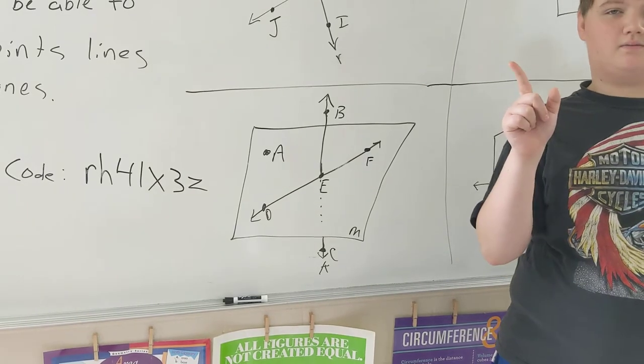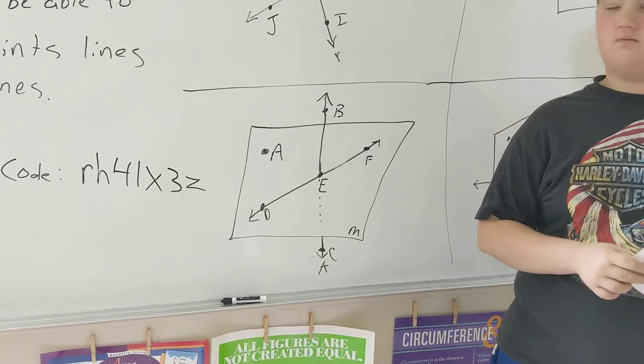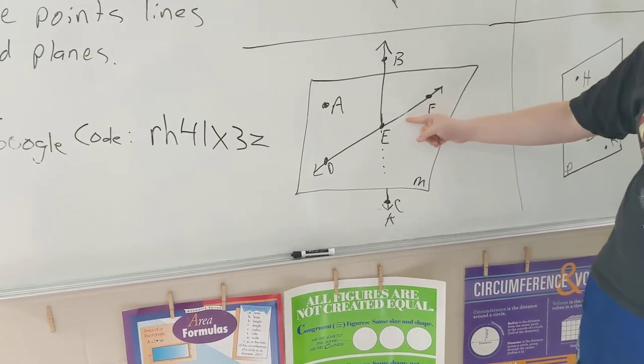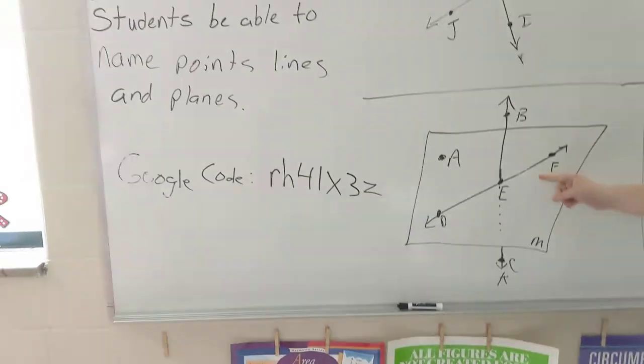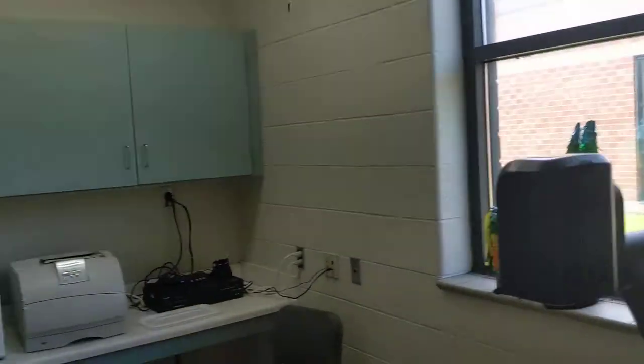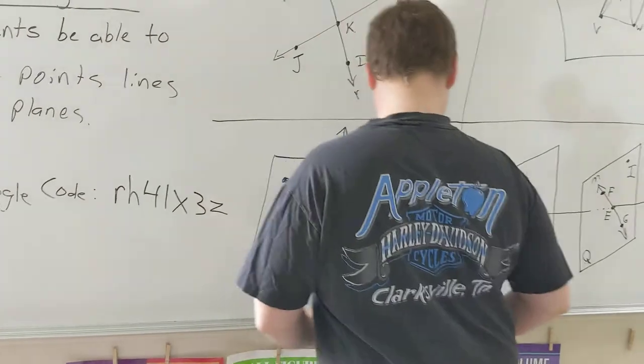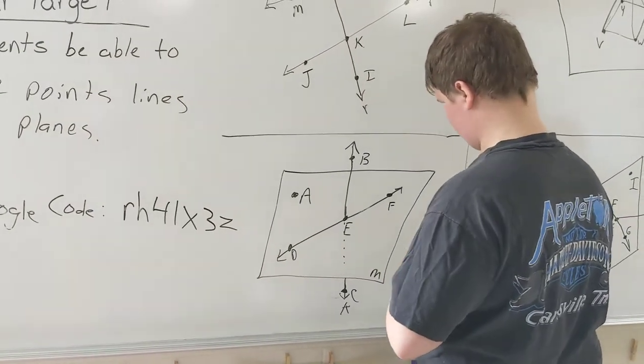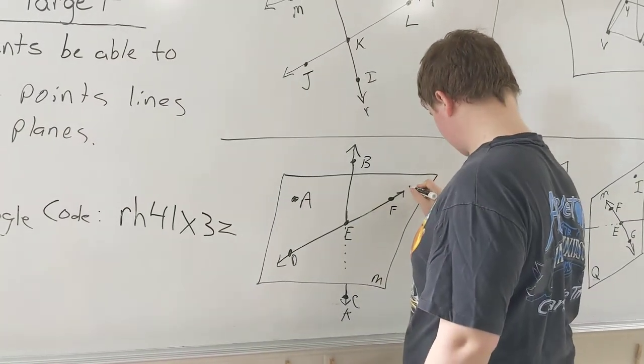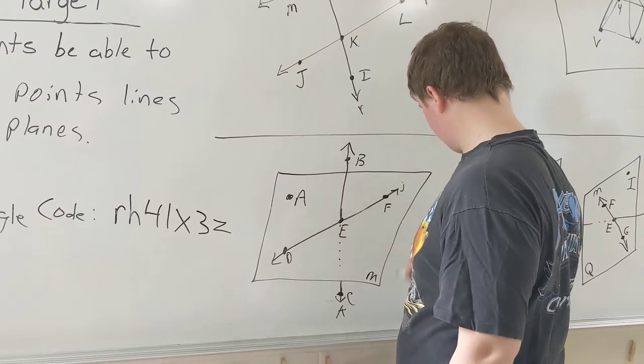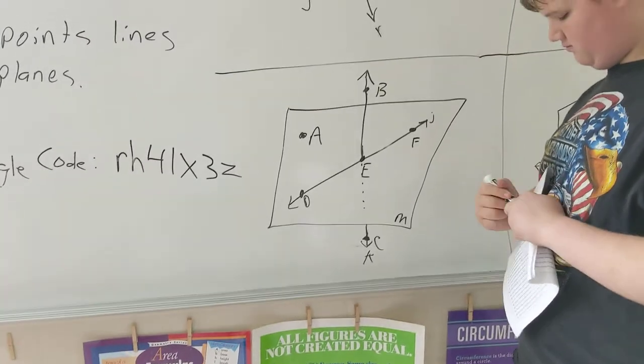Line J. This one. Yeah, somebody's erased it, so go ahead and put J on there. Right there's the pen. Somebody has erased our line on there. That's fine. Just to make sure. Alright, line J.